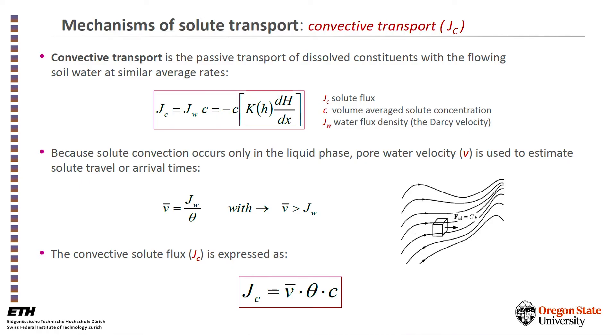First is the convective transport or the convection of solutes with the streams of water. The flux of solute by convective transport, which we call J_c, is simply the flux of water times the concentration of solute in that flux of water.